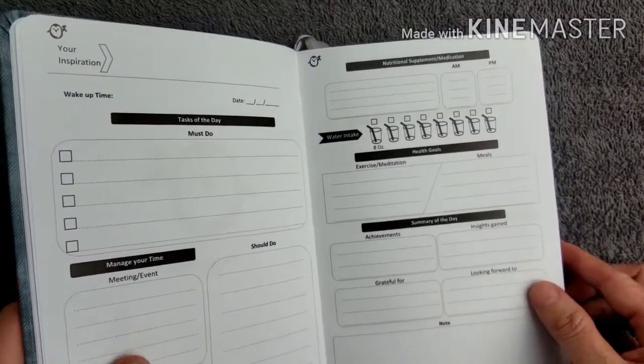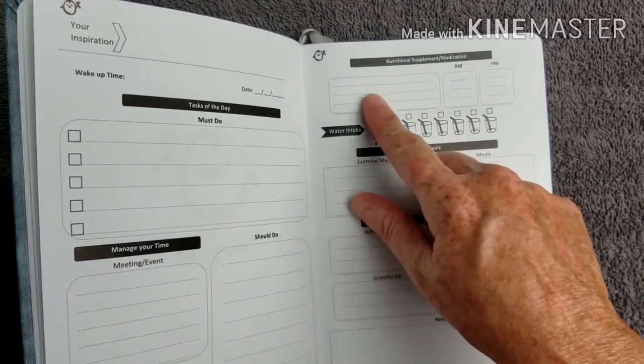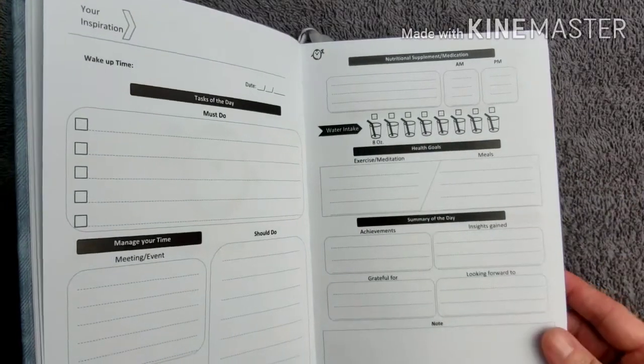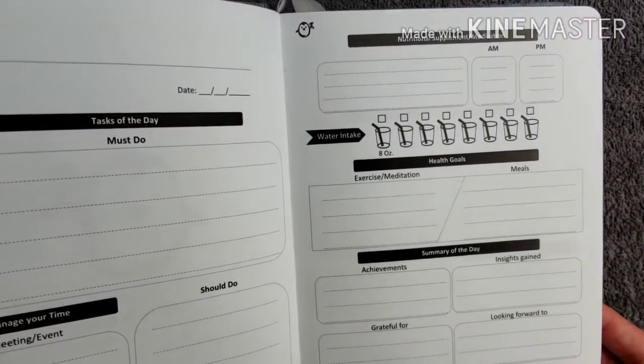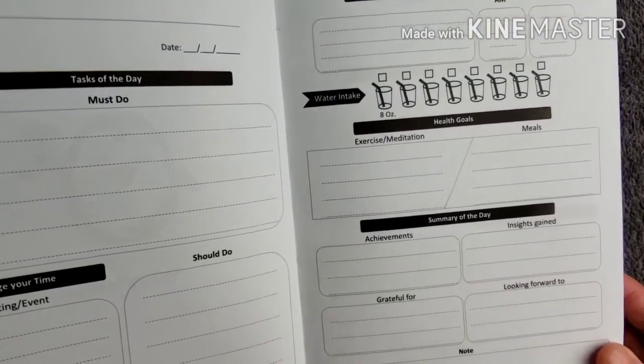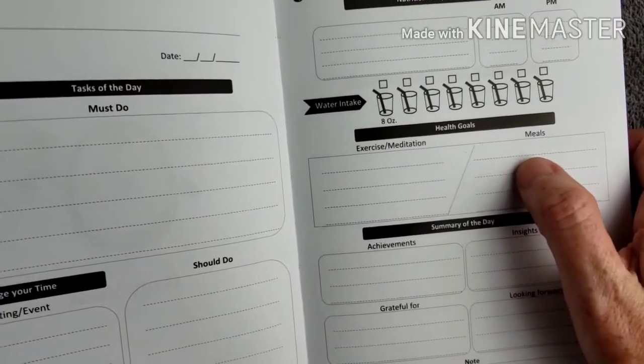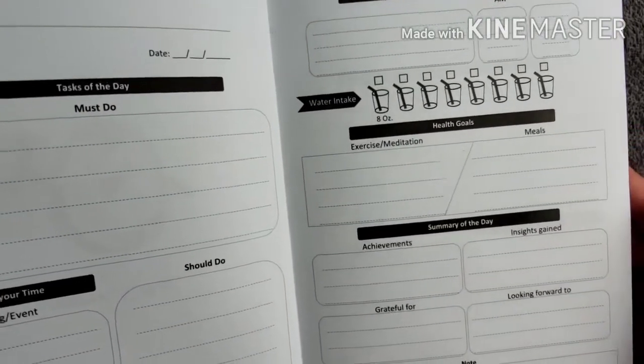So this can also be used to keep track of your health and wellness. You can write your medications or your supplements and check off when you take them. Check off your water intake, your exercise, meditation, your meals. Now, there's not a whole lot of room here. So you'd probably want to write small and put your meal on one line and then if you have any snacks afterwards.